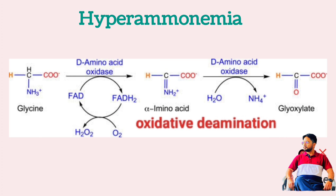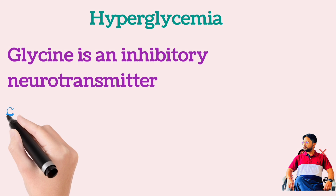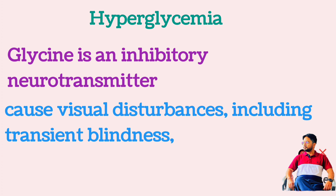Hyperammonemia results from the use of glycine-containing irrigation solution with subsequent systemic absorption of glycine; the glycine undergoes oxidative deamination to form glyoxylic acid and ammonia. Regarding hyperglycinemia: glycine is an inhibitory neurotransmitter, and the use of glycine-containing irrigation solution may cause visual disturbances including transient blindness during TURP syndrome, reflecting the role of glycine as an inhibitory neurotransmitter in the retina.